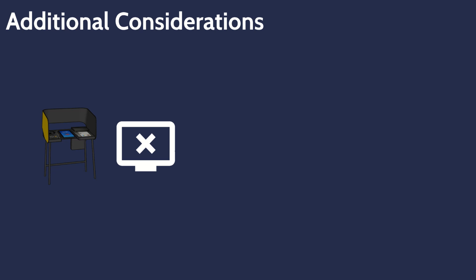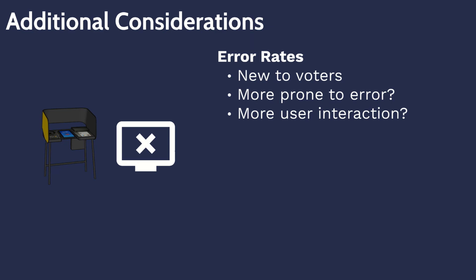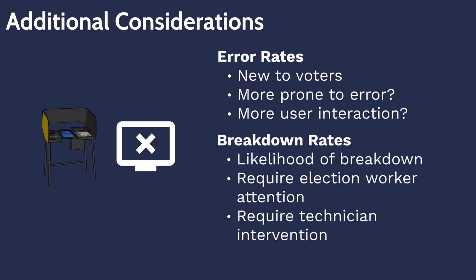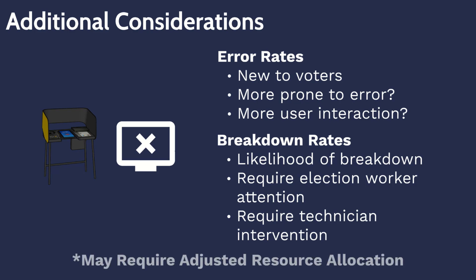Additional considerations when implementing new voting equipment or a new voting process include the rate of errors and breakdown rates of the new device. When using a device that is new to voters, it is likely that voters will take longer to perform a voting step than expected, as they must become familiar with the new equipment. Different voting equipment may also have a higher or lower likelihood of breakdowns requiring a poll worker's attention. Understanding breakdown and error rates may require observations throughout multiple elections, but is critical to determining how many devices should be allocated. If breakdown rates are higher or breakdowns take longer to resolve, more devices may be needed to ensure voters do not face significant waits.